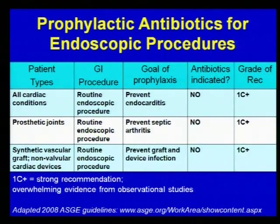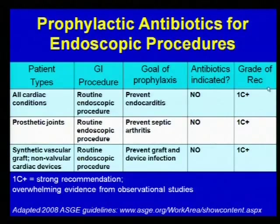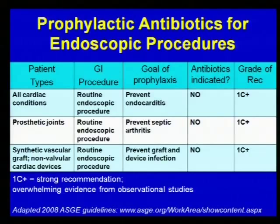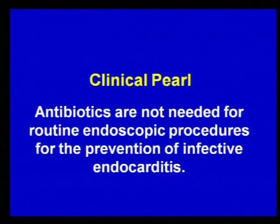Who should not get antibiotics? Any cardiac condition undergoing routine endoscopic procedures — EGD, colonoscopy, flexible sigmoidoscopy — where the goal is to prevent endocarditis: antibiotics are not indicated, based on fairly strong recommendation from observational studies. Similarly, those with prosthetic joints undergoing routine endoscopic procedures with the goal of preventing septic arthritis: not indicated. Those with synthetic vascular grafts or non-valvular cardiac devices like an AICD or pacemaker undergoing any routine endoscopic procedure: antibiotics are not indicated. The clinical pearl: antibiotics are not needed for routine endoscopic procedures for the prevention of infective endocarditis.